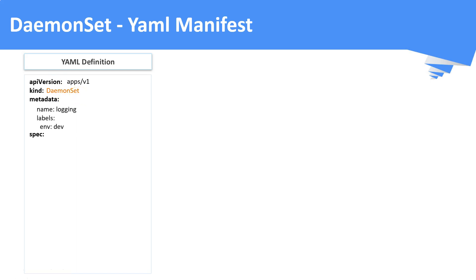The metadata field holds the name and labels for the DaemonSet itself. Under spec, you have two important fields: selector and template.